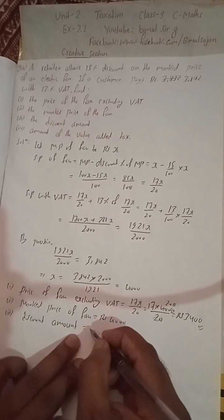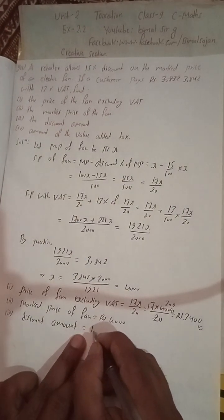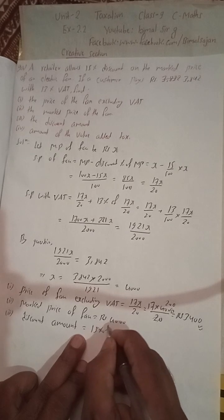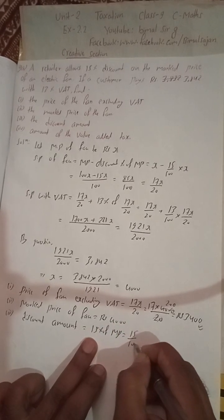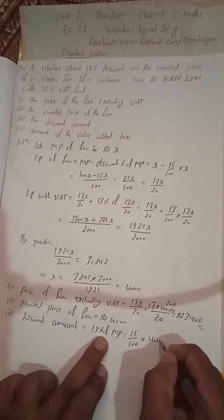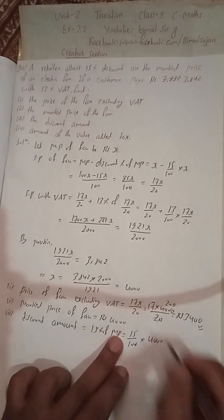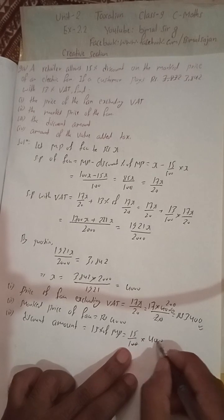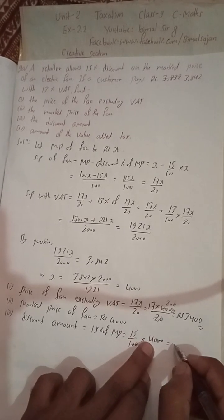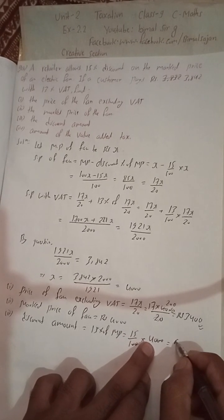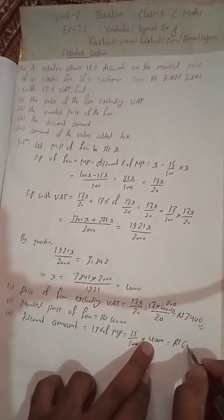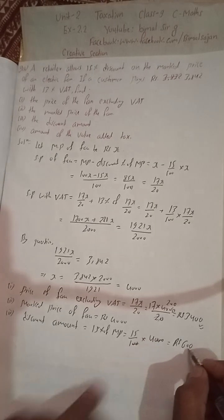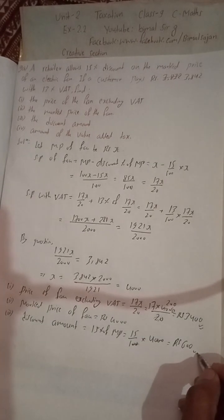Number 3 — the discount amount: Discount = 15% of MP = (15/100) × 4000. Cancelling two zeros: 15 × 40 = Rs 600. So the discount amount is Rs 600.